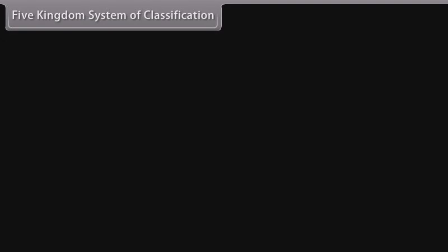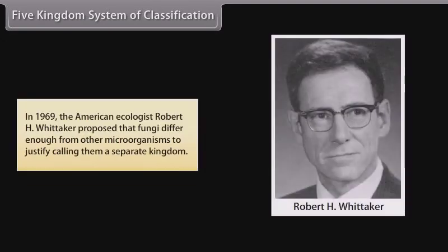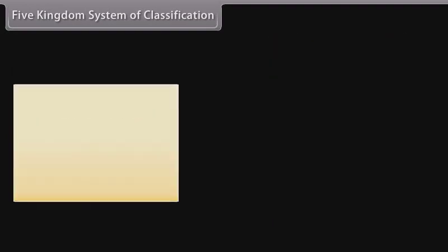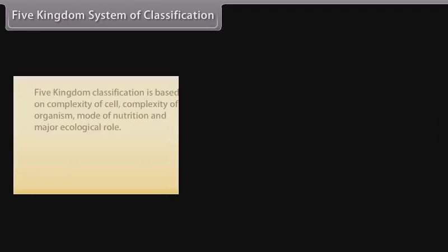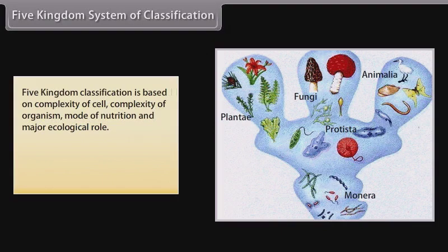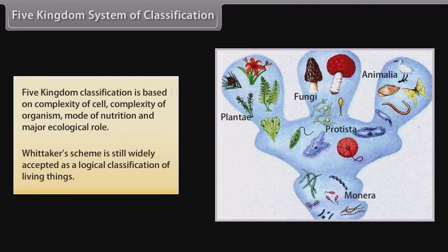Five Kingdom System of Classification: In 1969, American ecologist Robert H. Whittaker proposed that fungi differ enough from other microorganisms to justify calling them a separate kingdom. This led to a five-kingdom scheme comprising Monera, Protista, Fungi, Plantae, and Animalia. The five kingdom classification is based on complexity of cell, complexity of organism, mode of nutrition, and major ecological role. Whittaker's scheme is still widely accepted as a logical classification of living things.